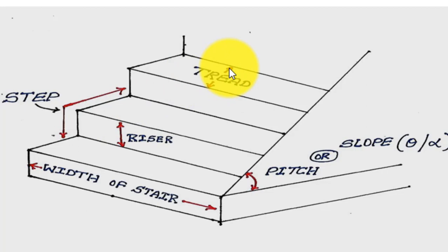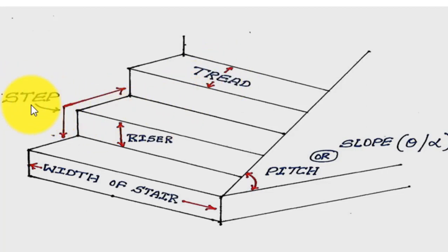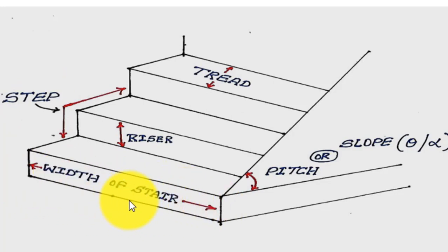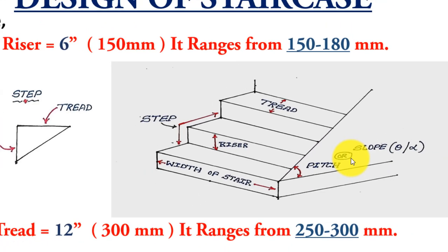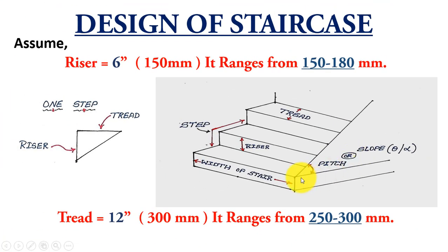As you can see in the figure, the tread and riser together form one step. The width of the staircase we will discuss later. The angle shown is called the pitch or slope, represented by theta or alpha — this is the slope of the staircase, which we will also calculate.